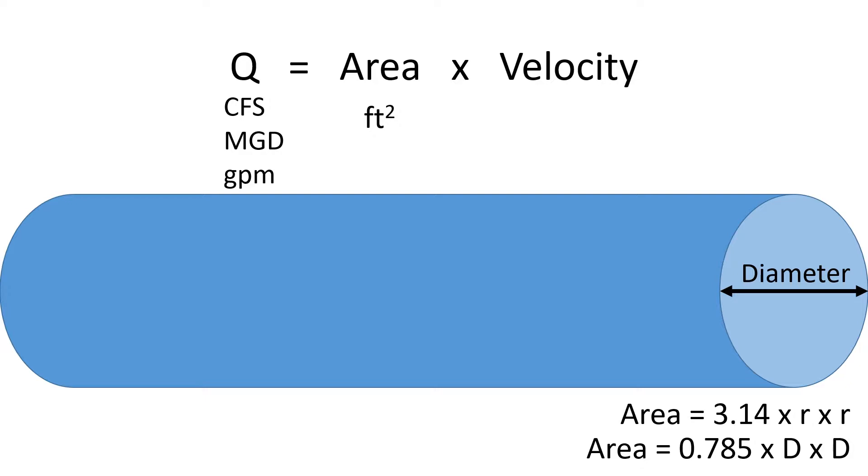So we'll work these problems using 0.785 × D × D, and then the velocity is given in feet per second.